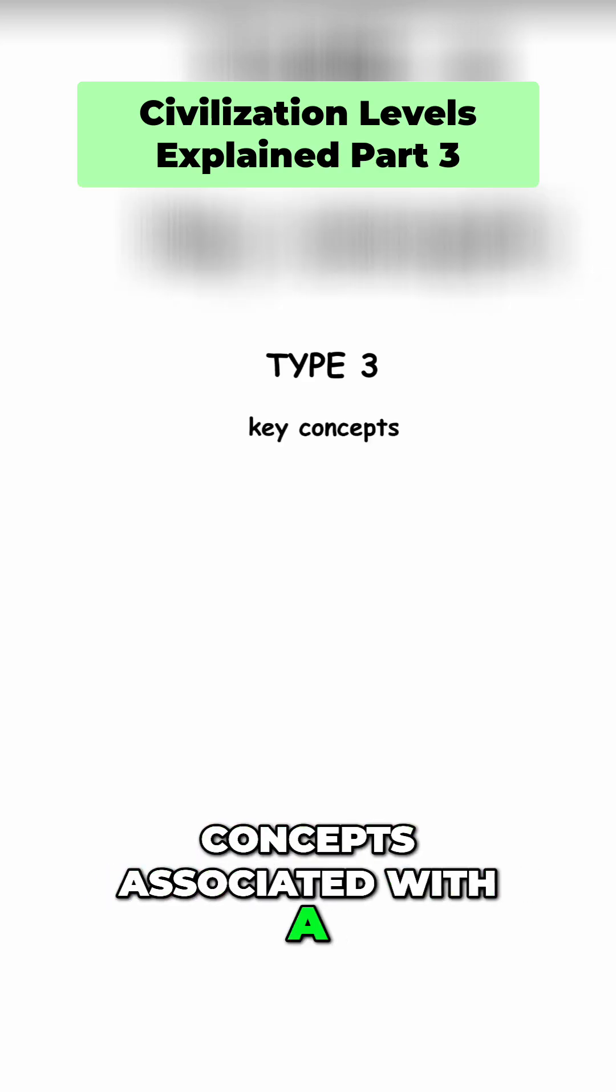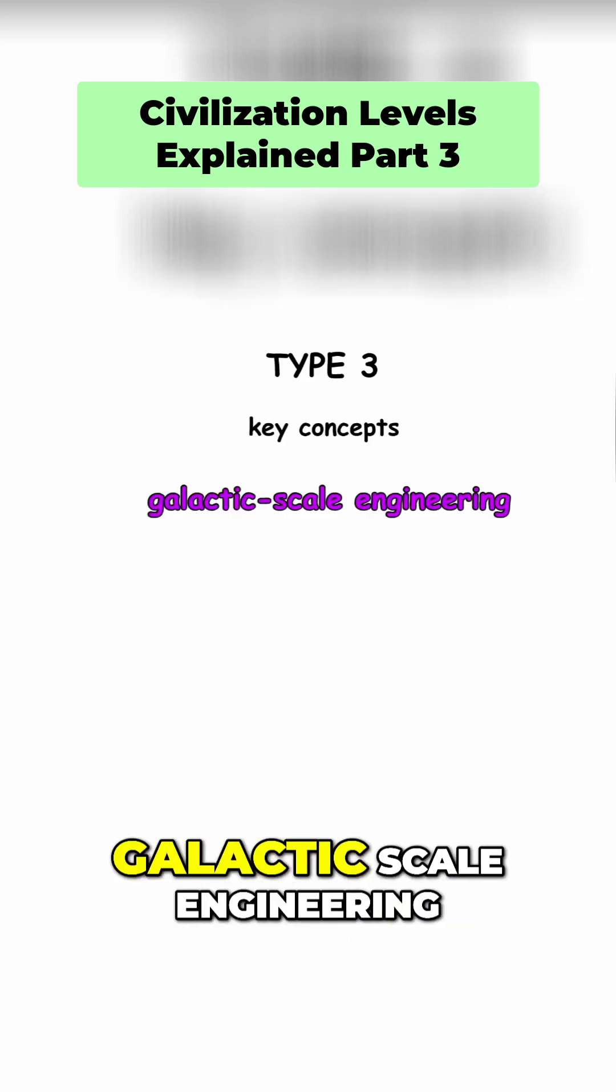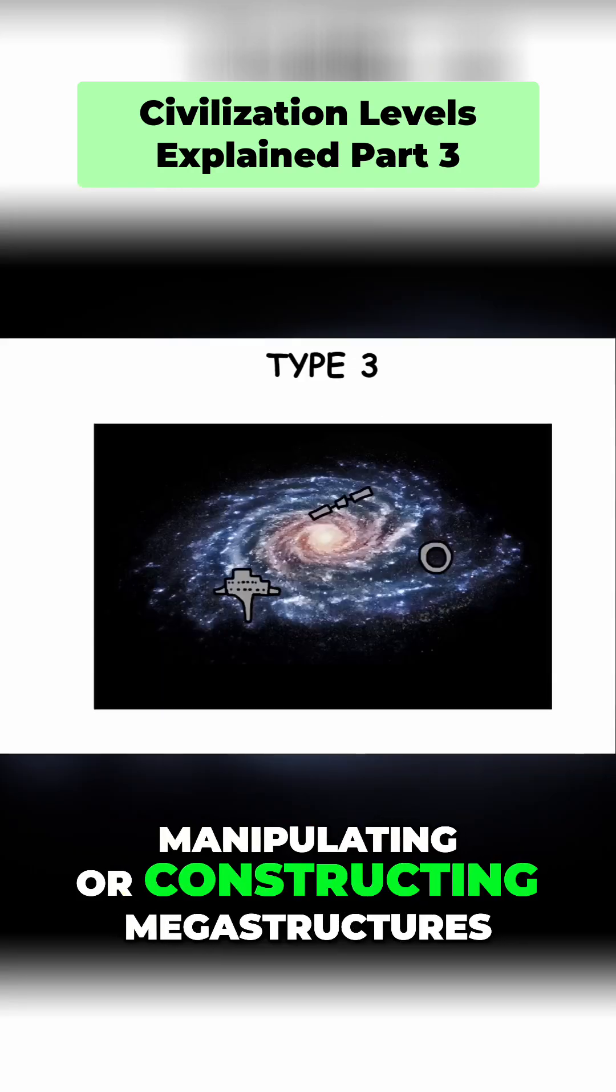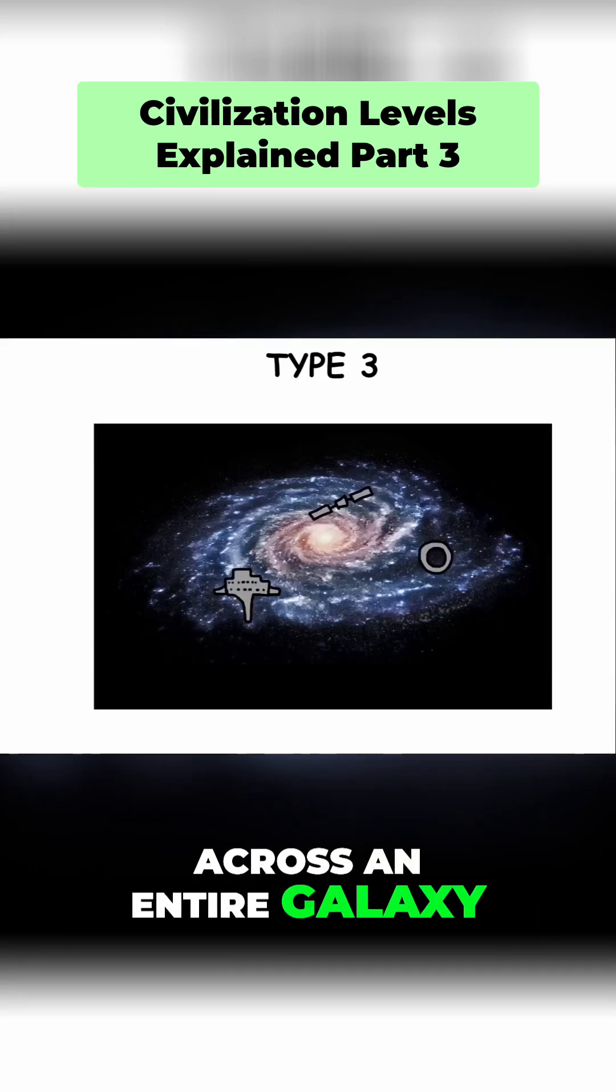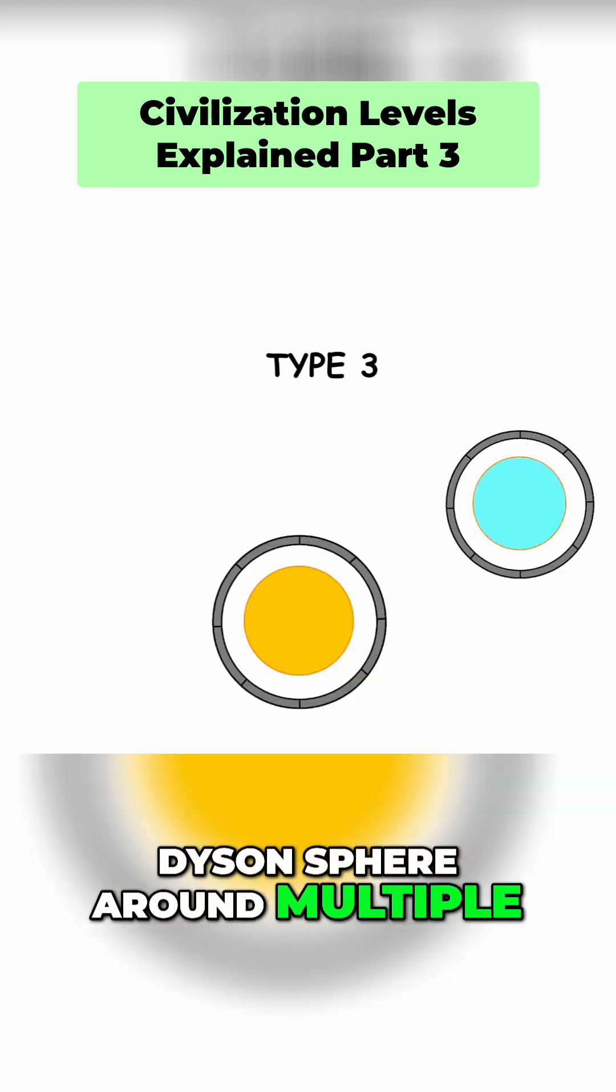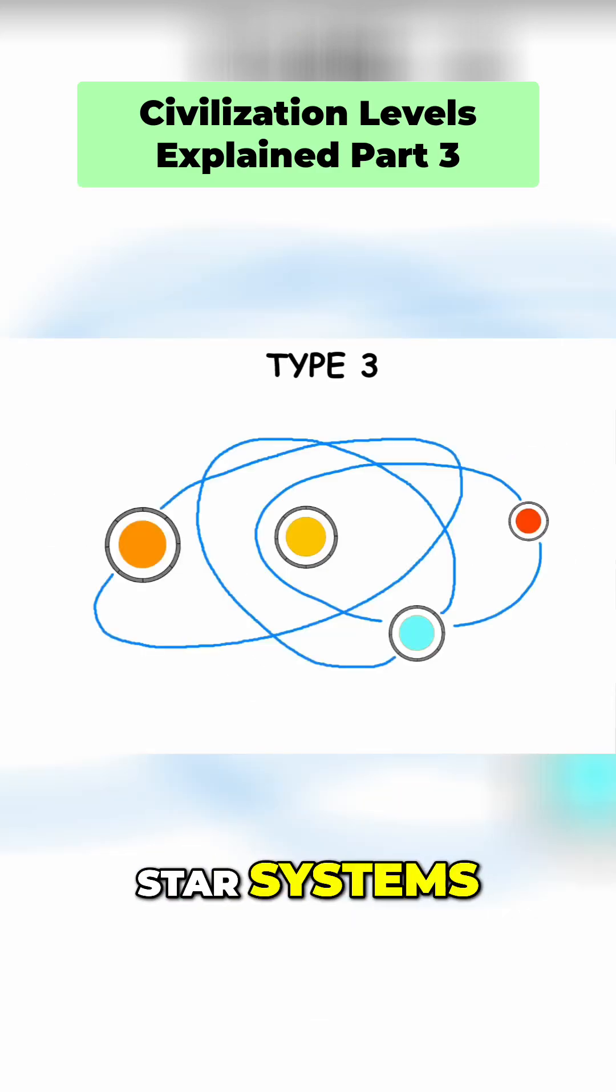One of the key concepts associated with a Type 3 civilization is galactic scale engineering, the theoretical concept of manipulating or constructing megastructures across an entire galaxy. This could involve creating massive structures like a Dyson sphere around multiple stars or even entire star systems.